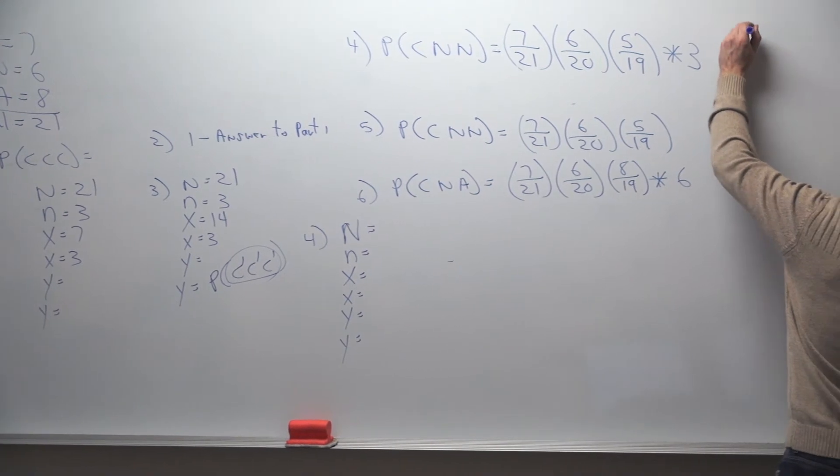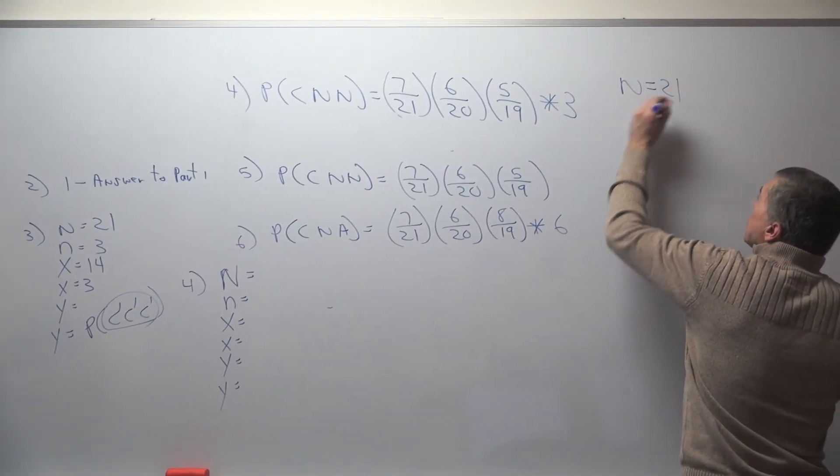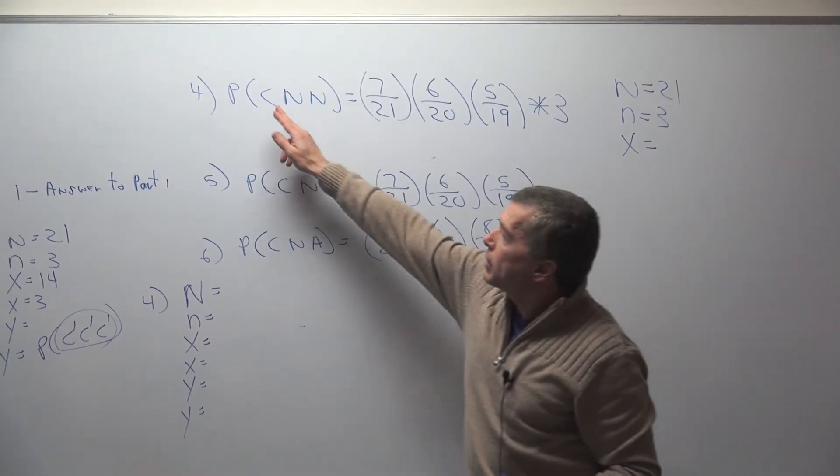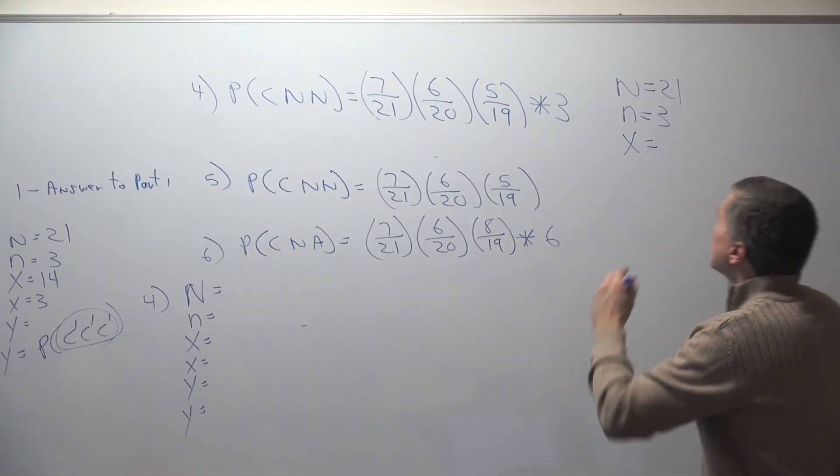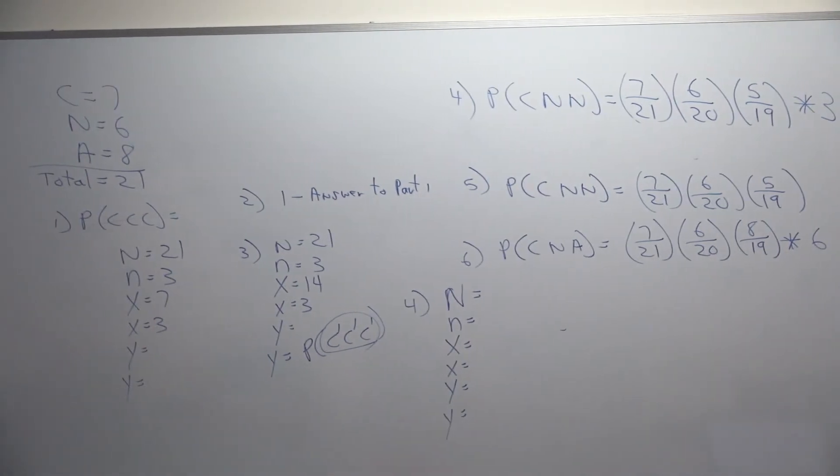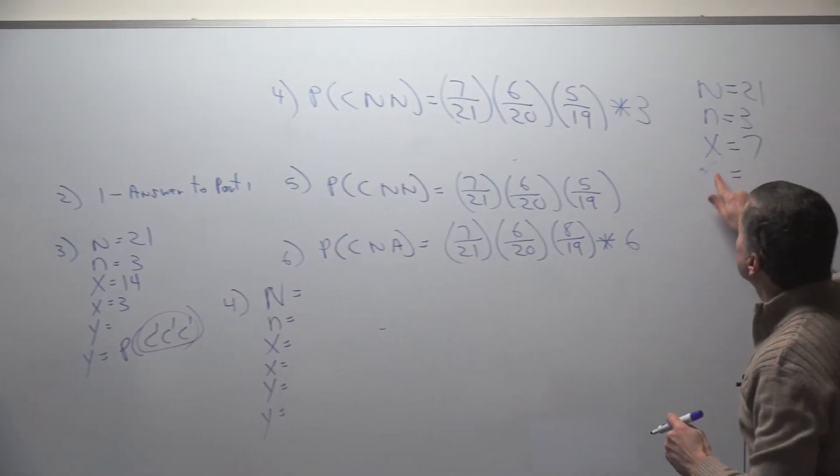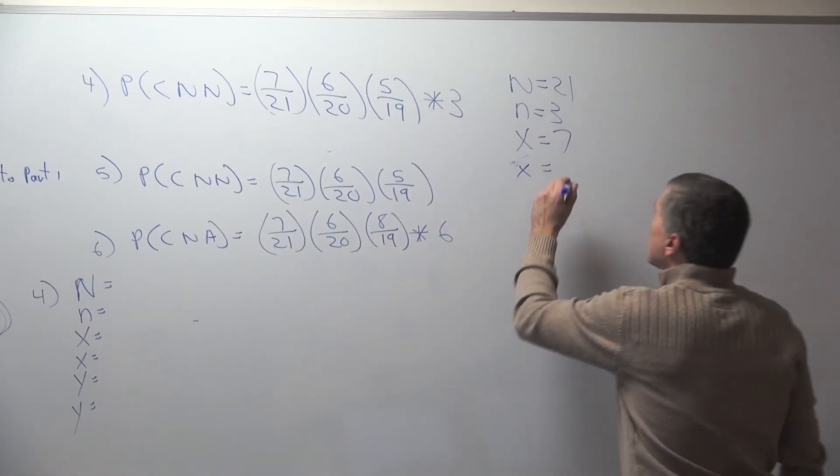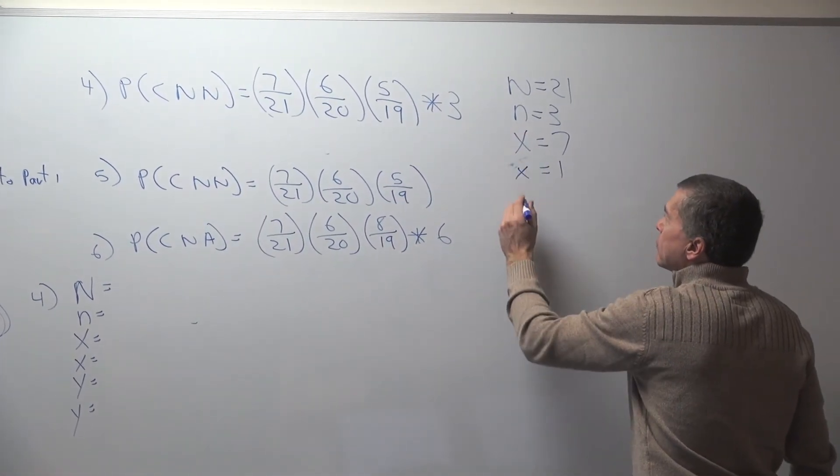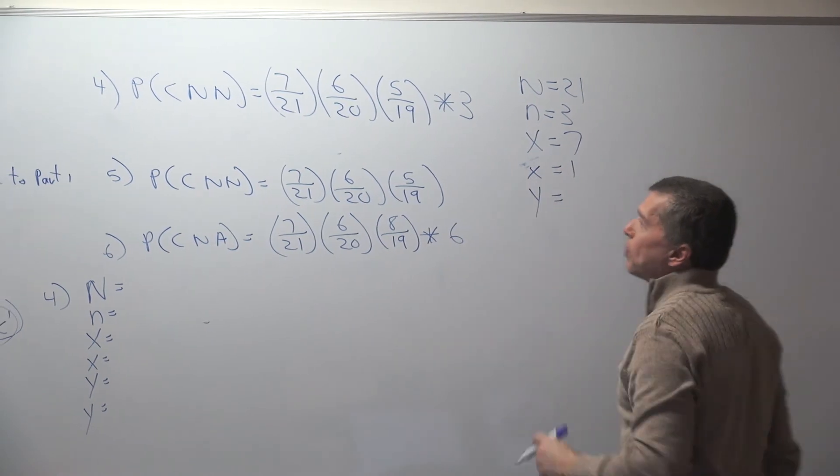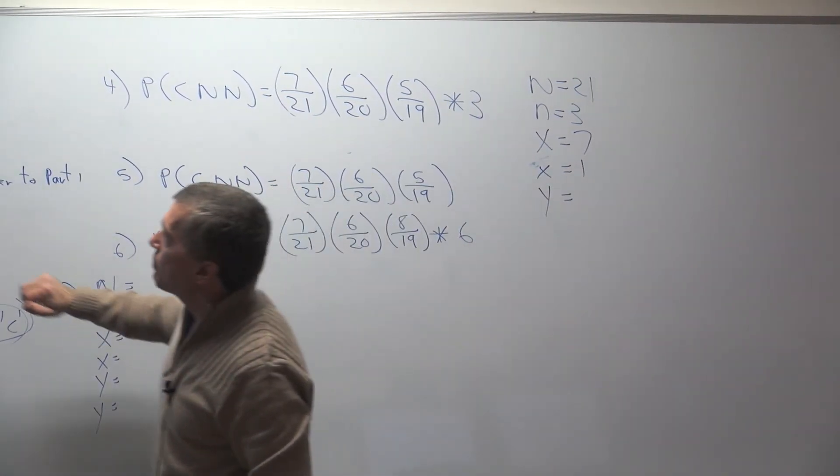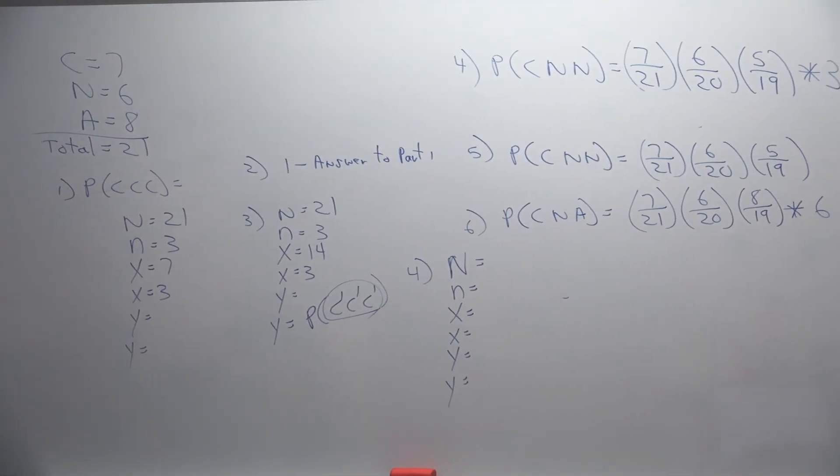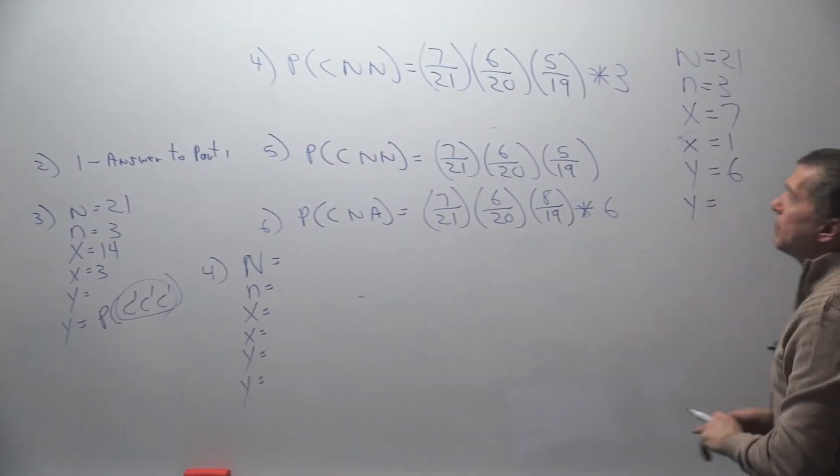Here it is with fractions. A lot of people forget this times three. With the Excel sheet, it would be 21 people. We're selecting three. Let's go with California to begin with. How many people in the population are from California? Seven. How many do I need from California? This is the little x here. Just one. And then let's go to Nevada. How many people are from Nevada in my population? Six. And how many do I need in my sample? Two.